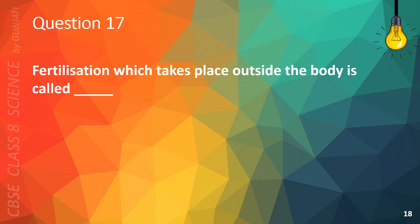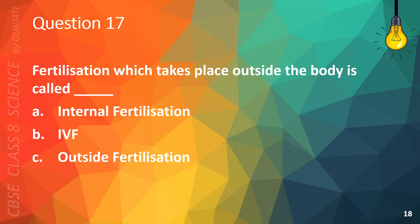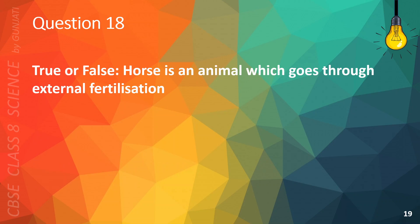Question 17. Fertilization which takes place outside the body is called: A. Internal fertilization, B. IVF, C. Outside fertilization, or D. External fertilization. The correct answer is D. External fertilization. Question 18. True or false: Horse is an animal which goes through external fertilization. The correct answer is B. False.